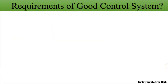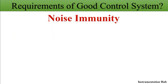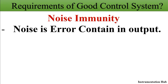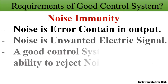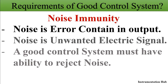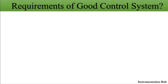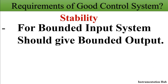The third parameter is noise immunity. Noise is an unwanted electrical signal — in other words, it is an error. While designing a control system, you must remember that the control system should be able to reject any noise that is created. So the noise immunity of the control system should be very high.